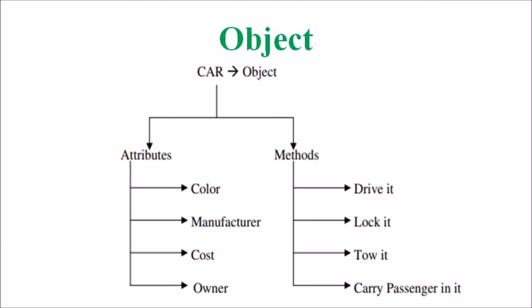When it comes to the object, a class is an entity in the real world that is identifiably separate from its surroundings. A car has a well-defined set of attributes in relation to other objects. For example, when considering a car as an object, the attributes or data of a car are color, manufacturer, cost, owner, model, etc.